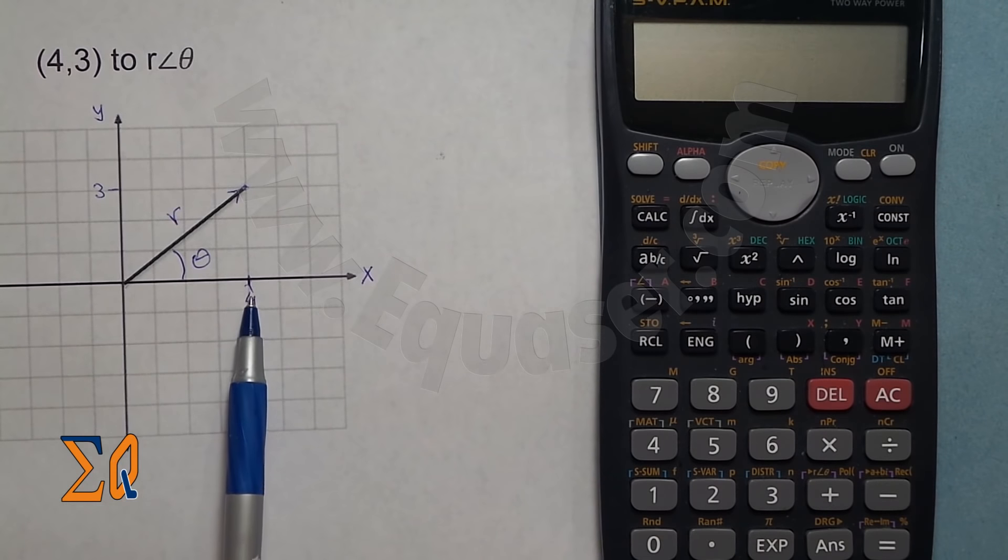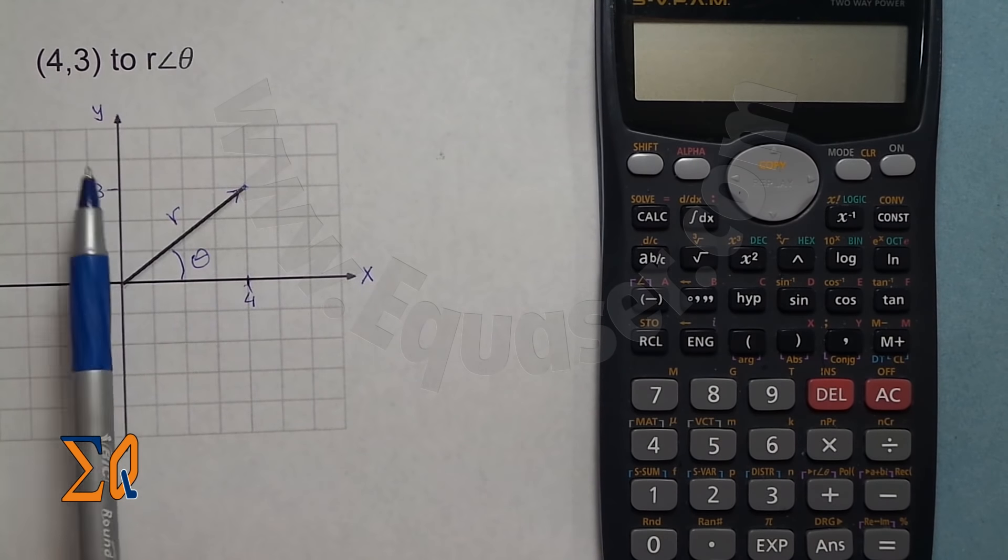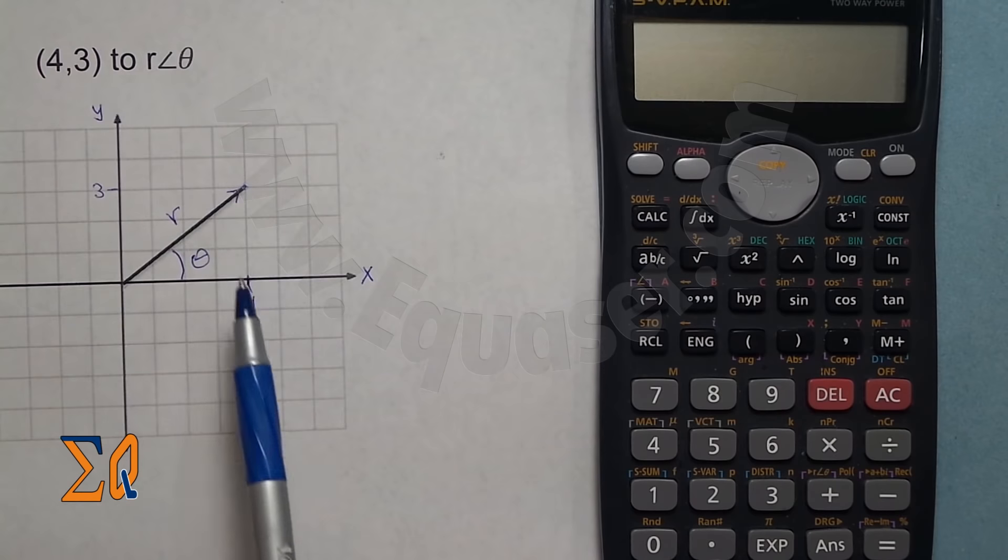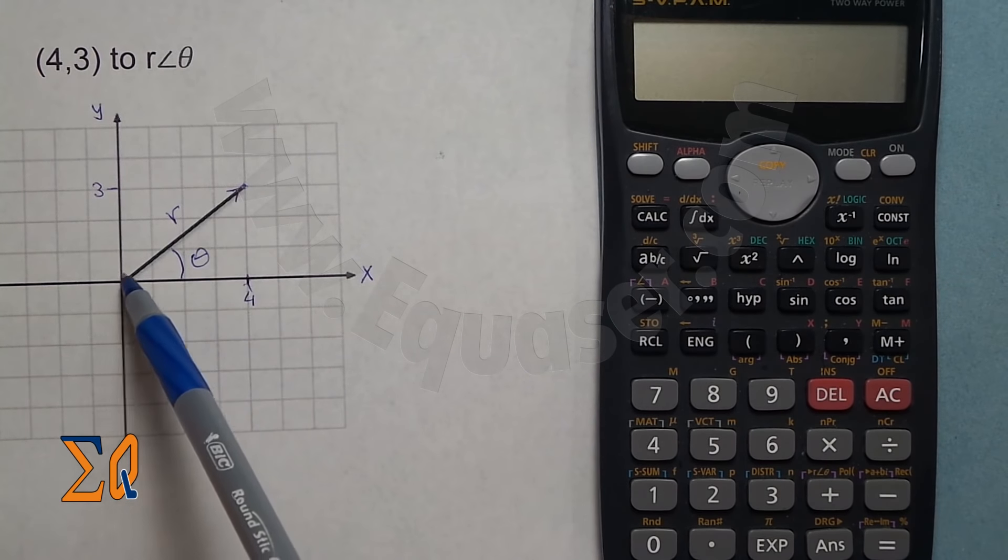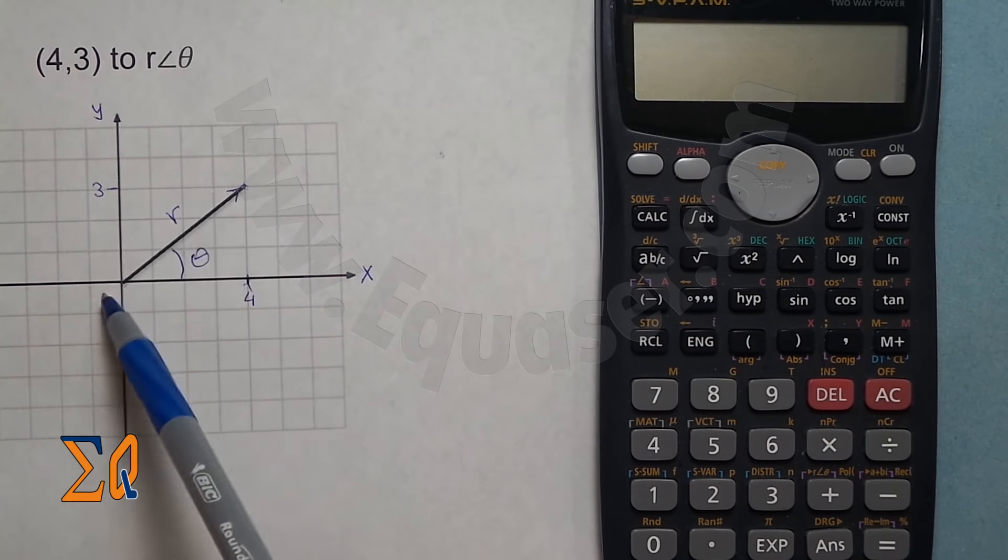The intersection of these two points is here. We want to find the magnitude or length of R from this point to this point. That is the distance we want to find and it's called R because it's the radius of this magnitude.